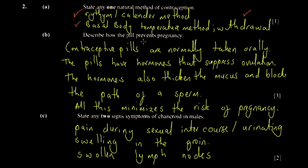And the B part says, describe how the pill prevents pregnancy. So this is a very commonly tested question. So the pills, they are usually taken orally. So a woman would take them, and the pills, they have hormones in them. So they studied with rabbits. So rabbits that were pregnant, you'd actually take the hormones there.